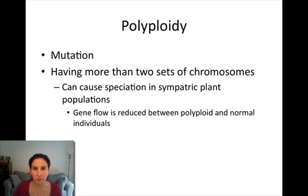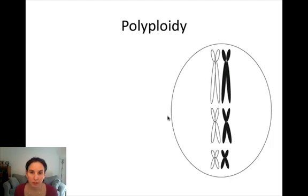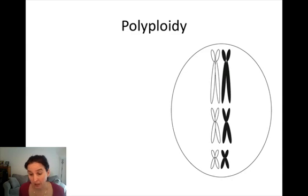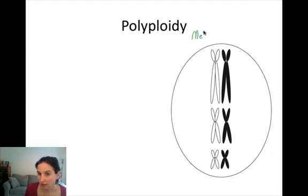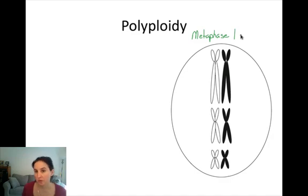Let's talk about what happens during the production of polyploid gametes in a cell about to undergo meiosis. Here's a cell in which a non-disjunction event is about to happen. This particular cell is in metaphase one of meiosis.